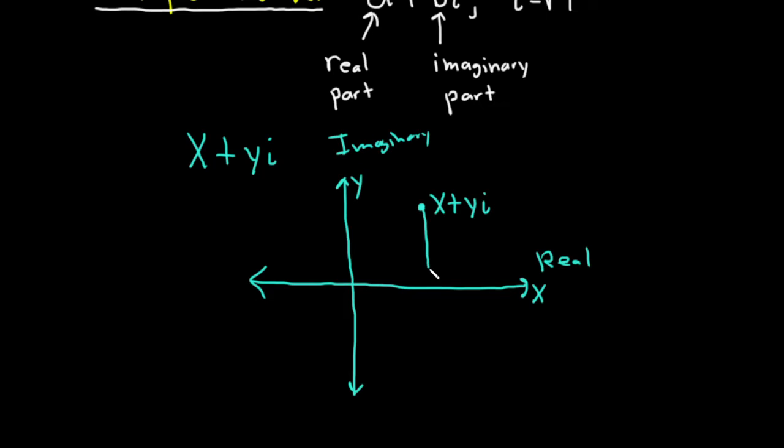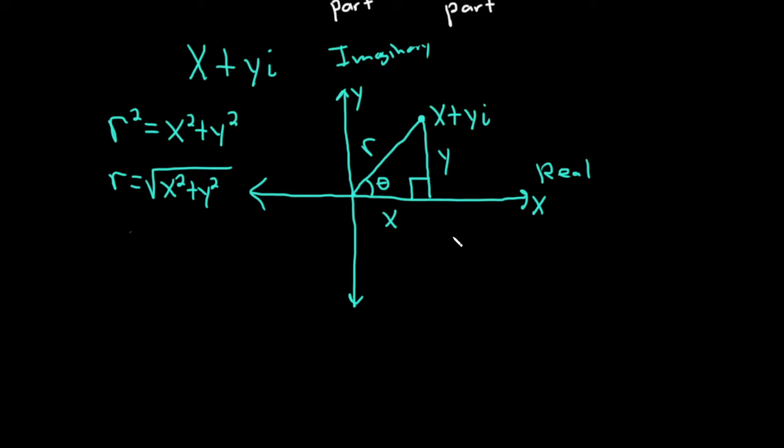x plus yi. Now if this was the complex plane, this would be the real axis and this would be the imaginary axis. We're plotting it here in the x-y plane. And now we can draw a triangle, and this will be the angle theta. This distance here is x, this distance here is y. Therefore, by the theorem of the legendary Pythagoras, I'll call this distance r. And we know that r squared is equal to x squared plus y squared.